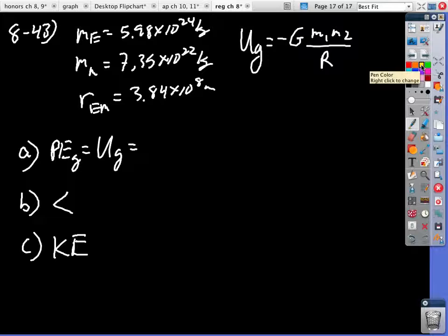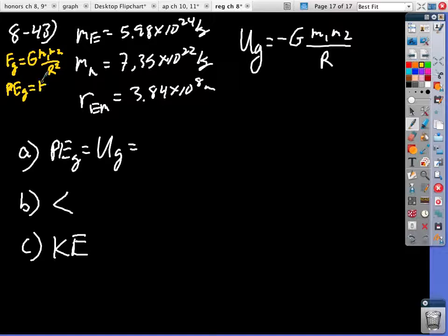on a little side note, I will say remember that F sub G was equal to big G M1 M2 over R squared, right? Well, what is PEG? It's equal to force times distance, right? It's like work. So if the distance is R, it's equal to F times R, FG. And what's FG? That's FG. So if you multiply this times R, the R cancels. So this R cancels there. That's where that comes from.